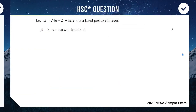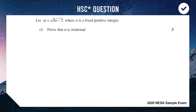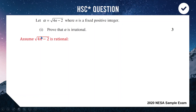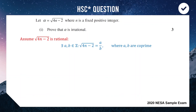We're finishing with an HSC-style question from the 2020 NESA sample exam. We have α = √(4n − 2), where n is a fixed positive integer. Prove that α is irrational. The setup is the same as before: assume √(4n − 2) is rational and write it as a/b, where a and b are co-prime integers with no common factors.